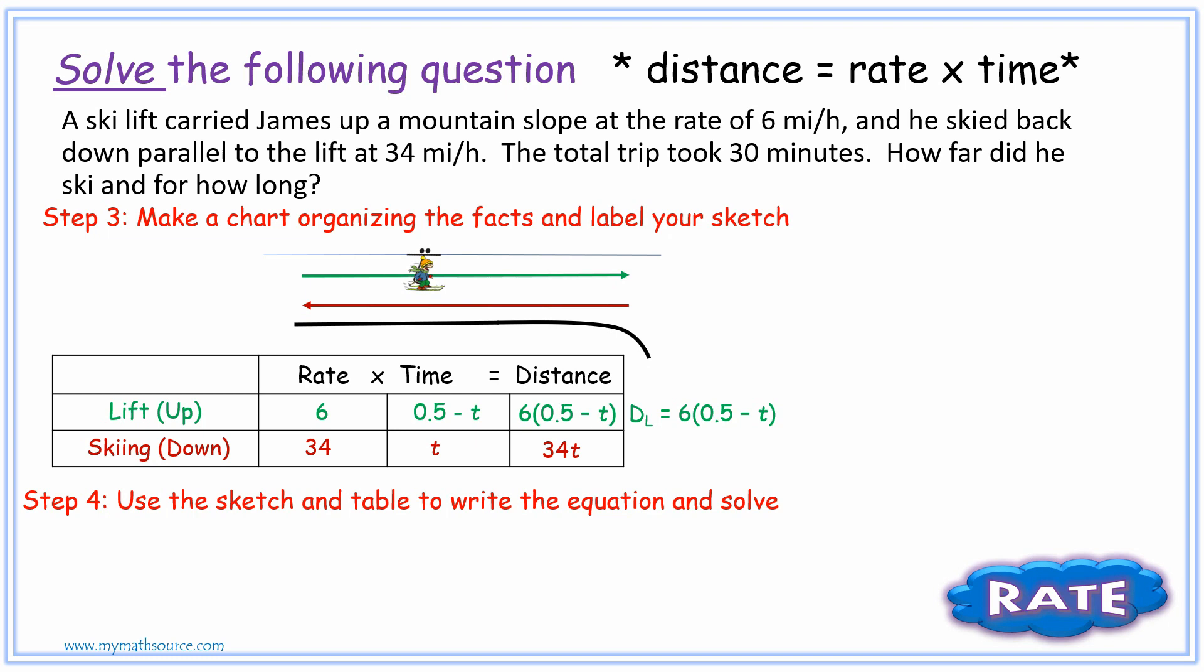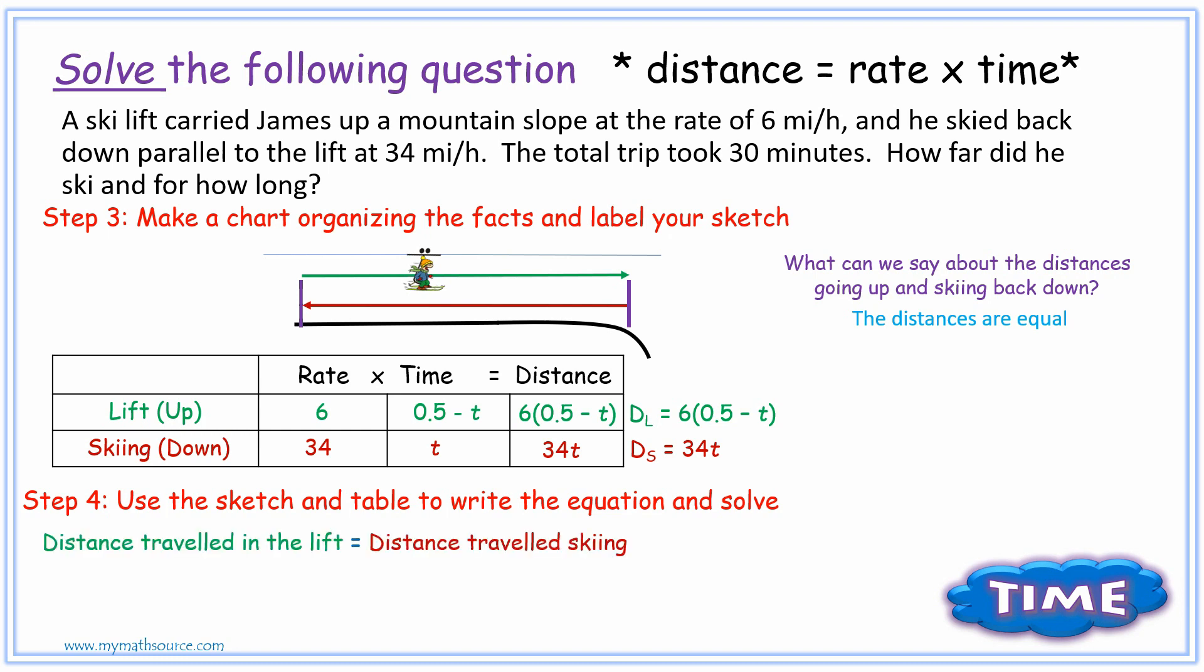So let's just look at what our lift is one more time. We have our distance for our lift going up is equal to 6 times the quantity 0.5 subtract T. And then our skiing down is 34T. So just thinking about it, what can we say about the distances going up and skiing back down? Remember, I made my eyes a bit horizontal for space. But if you look at the dimensions or basically the distance, they are the same. And we can use that, the concept that our distances are equal, to come up with our equation.